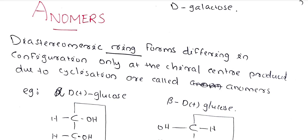Epimers and anomers are almost similar, but the key difference is: epimers refer to the open-chain (long-chain) formula, while anomers apply to the ring form. In the case of pyranose, it is a pyranose ring structure — for example, glucopyranose or fructopyranose.